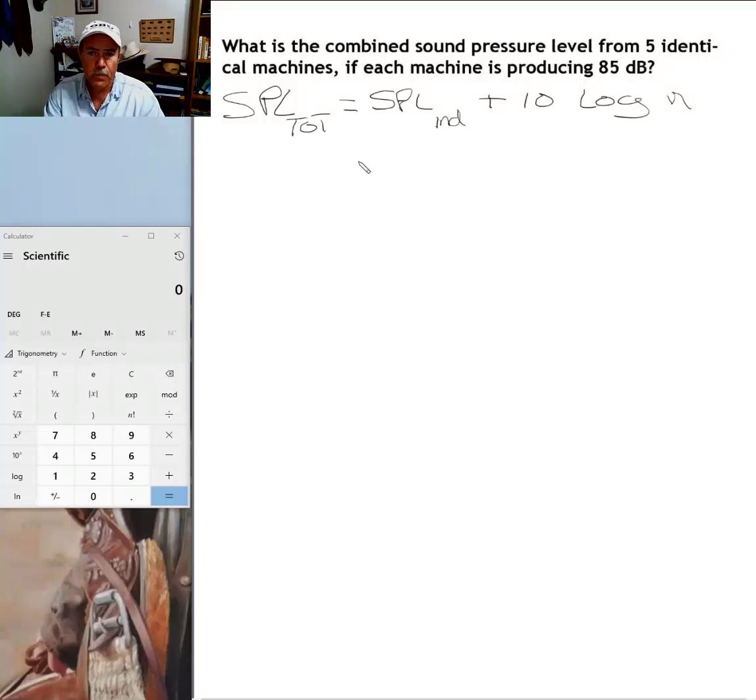SPL individual is the sound level produced by an individual machine. In this problem, it's 85 decibels. 10 is a constant—it will be the same number every time we use this formula.